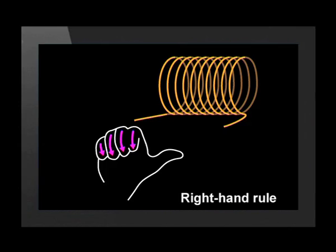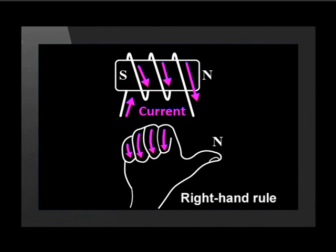Remember, earlier in the lesson we said that magnetic fields move from north to south. The part of the solenoid where the field comes out is the north pole of our electric magnet. There is an easier way to find the north pole — we can use the right-hand rule, but this time things change around. We use our fingers to show the direction of the current around the solenoid, and our thumb becomes the direction of the field. One way to remember this rule is that the many fingers on your right hand represent the many wires in the solenoid.